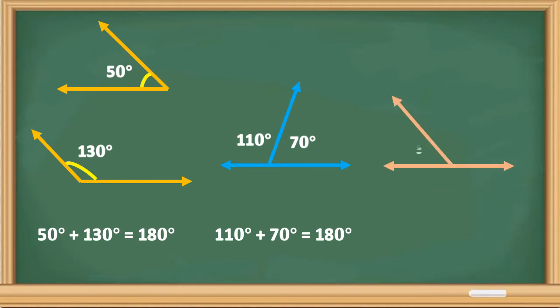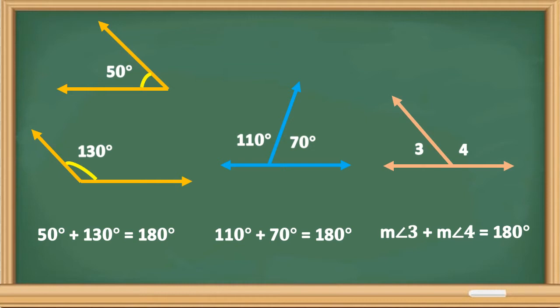Now we have a third example. We have angle 3 and angle 4. Observe that angle 3 and angle 4 are on a straight line, and a straight line has 180 degrees. So if we add the measure of angle 3 plus the measure of angle 4, that equals 180 degrees. Hence, angle 3 and angle 4 are supplementary.